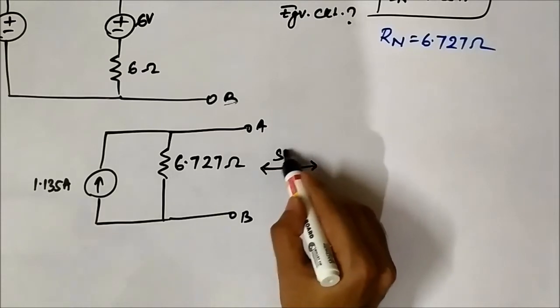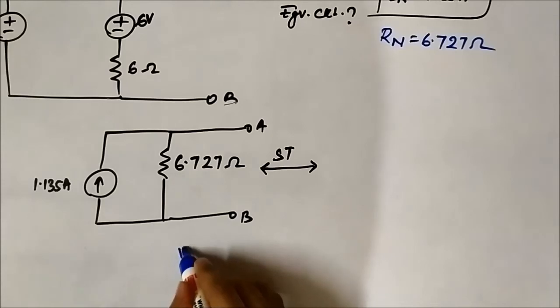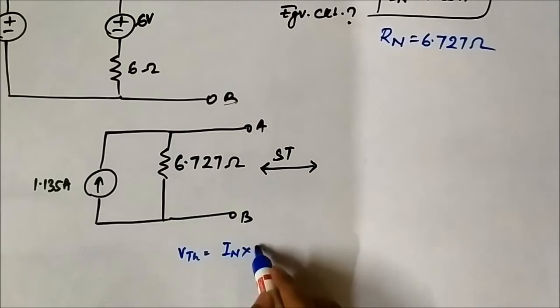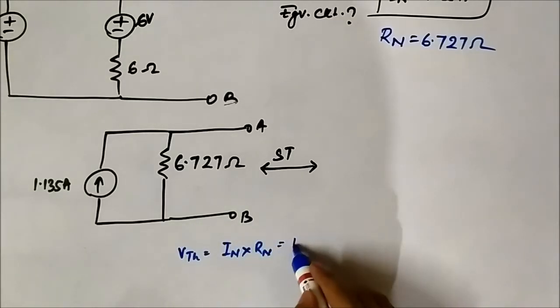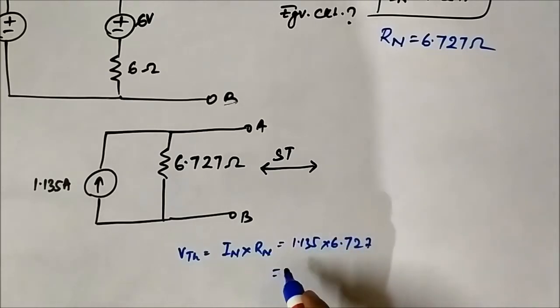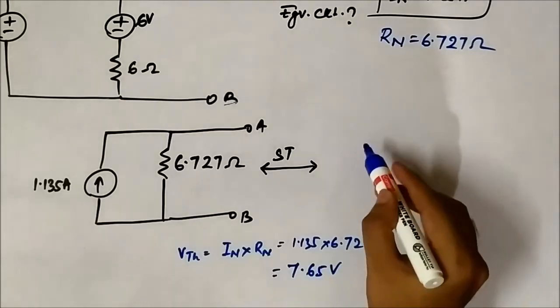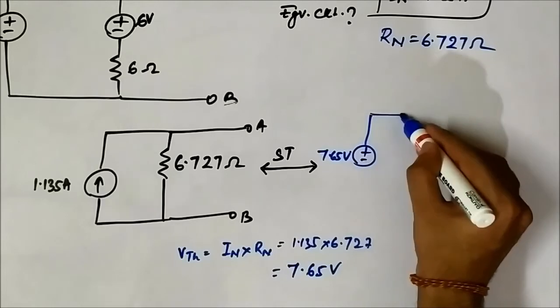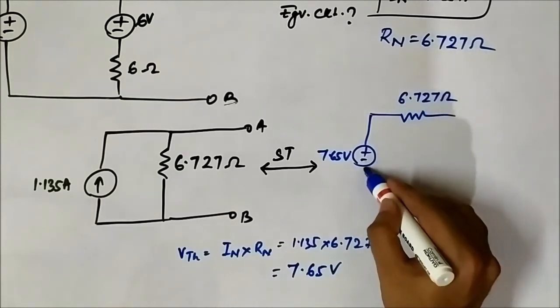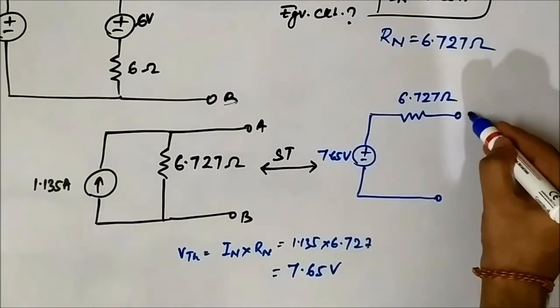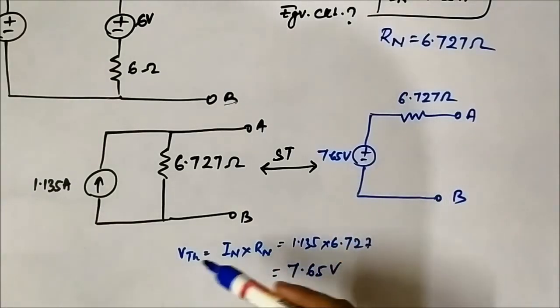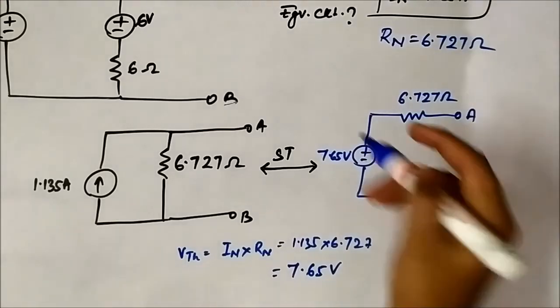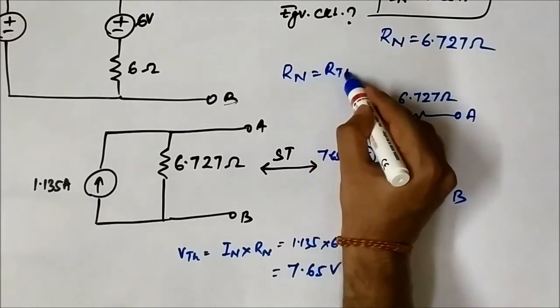When we apply source transformation, we will get the Thevenin equivalent circuit where Vth is In into Rn, or Rn is the same as Rth. It is 1.135 into 6.727 which is equal to around 7.65 volt. So that will be Vth, 7.65 volt, and the same equivalent resistance connected in series, 6.727 ohm. This is the Thevenin equivalent resistance because Rn is equal to Rth.